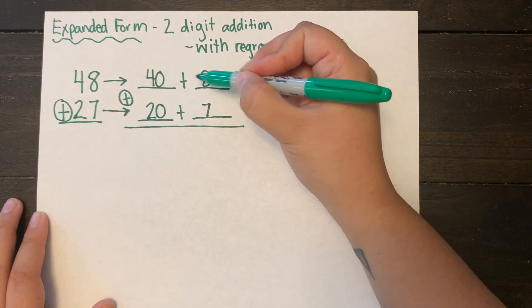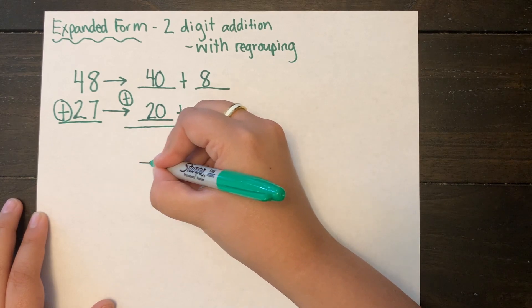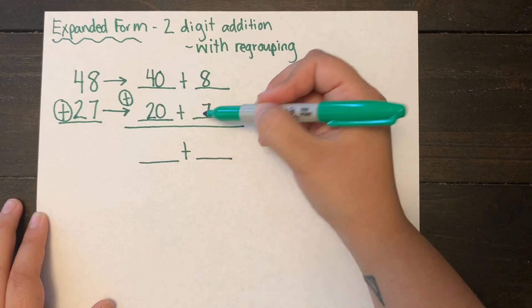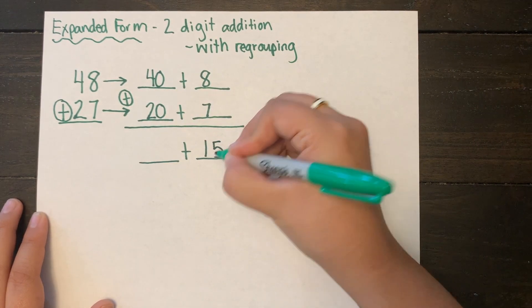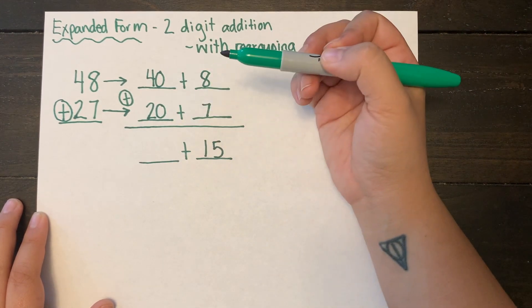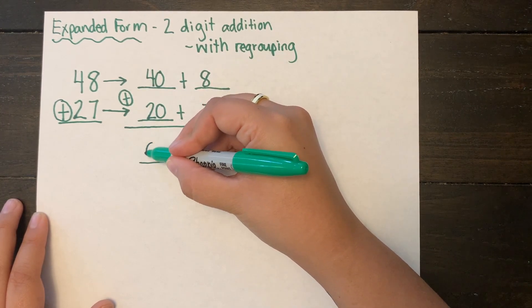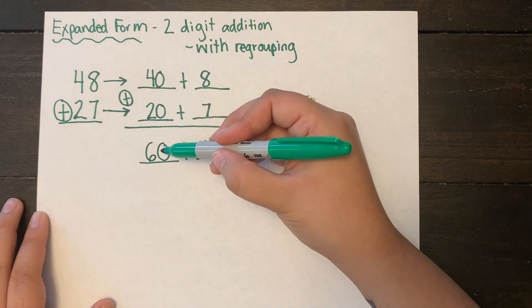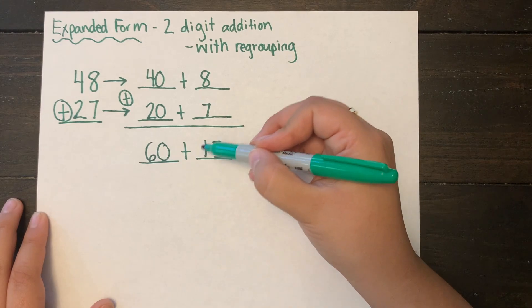Now what I always want to do first after I draw in my placeholders is I want to add my ones column first. So I see that I have 8 plus 7 and that equals 15. Then I'm going to solve for my tens column. So 40 plus 20 is 60. You can skip count by tens. You can draw quick pictures if you struggle with this concept.